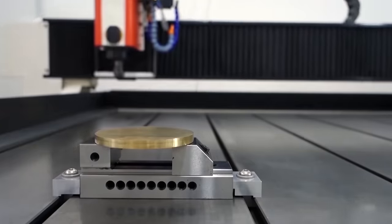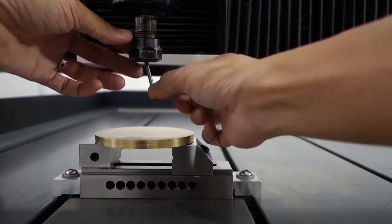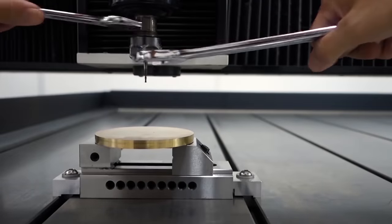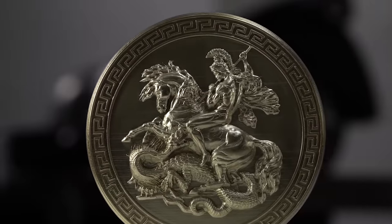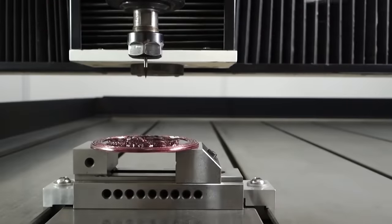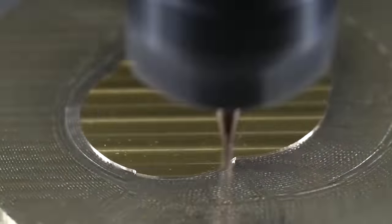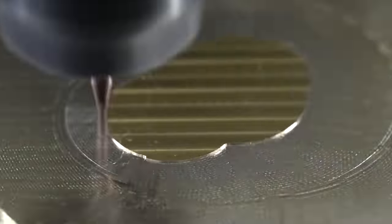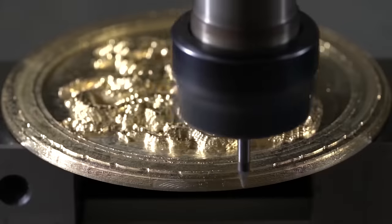Brass is a material that can be cut easily, but to make a pattern with many details, you must choose the right machine. To create the design you see on screen, a numerically programmed device was used. The nozzle with a diameter of two millimeters has a titanium coating, which allows engraving at high working speed without affecting the precision and quality of the final product.